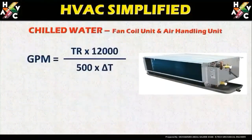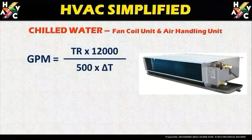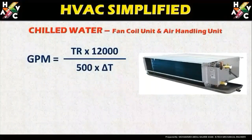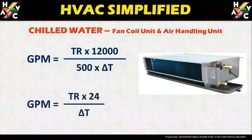The formula for GPM is: GPM = TR × 12,000 divided by 500 × ΔT. This can also be simplified as GPM = TR × 24 divided by ΔT.